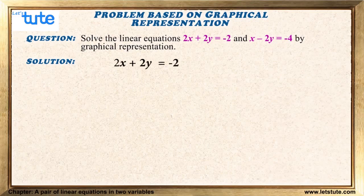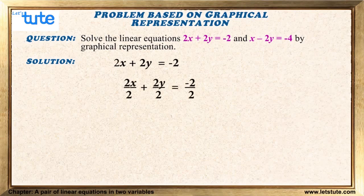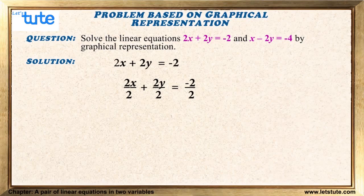Let us begin with the first equation: 2x plus 2y is equal to minus 2. We can see that all terms have 2 in common, so let us divide the whole equation by 2 to simplify. Dividing by 2 we get: 2x/2 plus 2y/2 equals minus 2/2, which simplifies to x plus y is equal to minus 1.